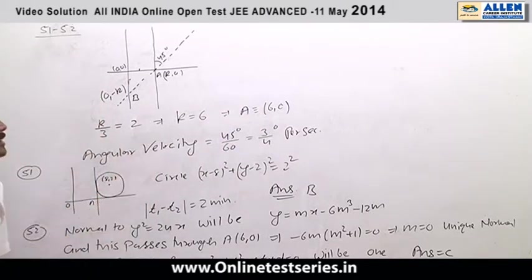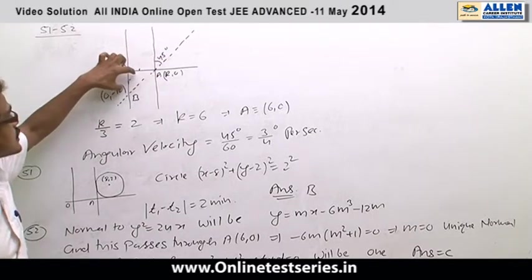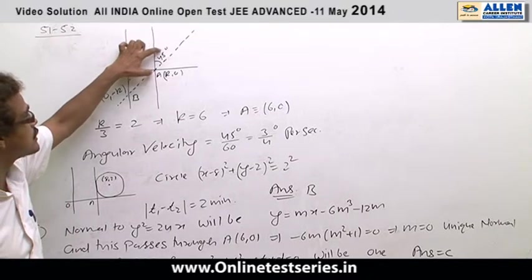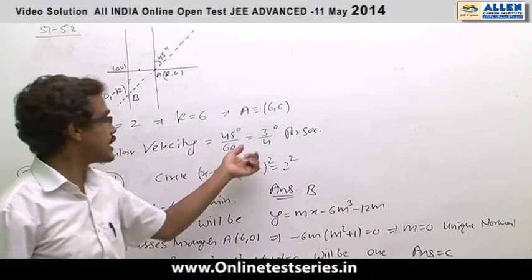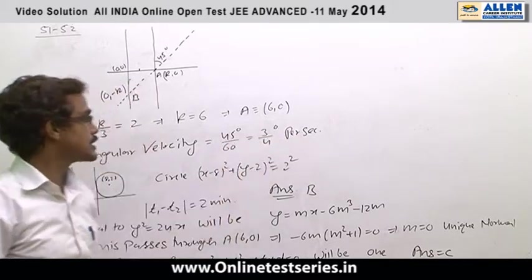Now, angular velocity of this rotation. We know that after one minute this situation occurs, so after one minute the rotation angle is 45 degrees. That's why per second rotation will be 3 by 4 degrees per second.